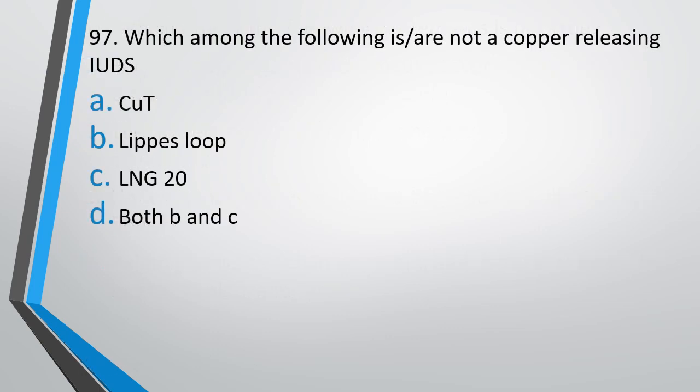Question number 97: Which among the following is/are not a copper-releasing IUD (intrauterine device)? Options: Copper-T, Lipos loop, LNG-20, or both B and C? The correct answer is Option D — both Lipos loop and LNG-20 are not copper-releasing IUDs.